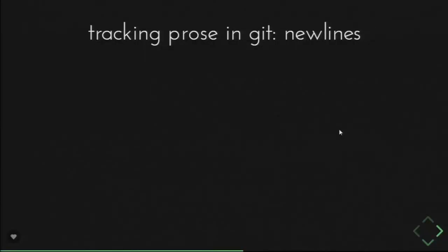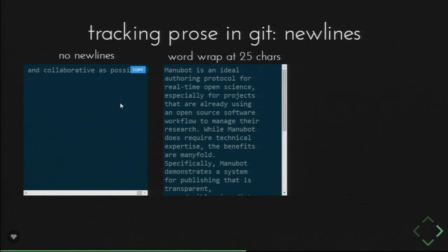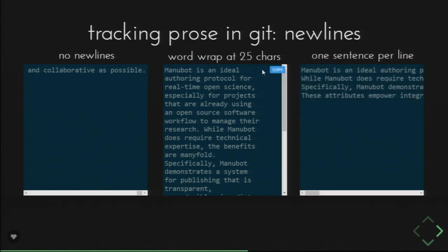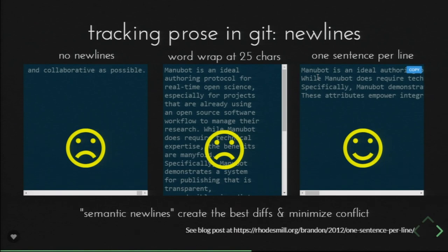Here's a recommendation for Manubot, and more generally whenever you're tracking prose with Git: there are a few ways to manage new lines within a paragraph. The first is to put everything in one block with no new lines. The second is word-wrapping so a line never exceeds a certain character limit. The third is one sentence per line, which your text editor would wrap for easier editing. We recommend one line per sentence — it creates the best Git diff, showing the best changes between versions, and minimizes conflicts, which happen when two people edit the same line simultaneously and can be challenging to resolve.